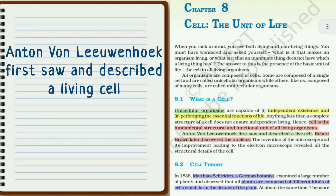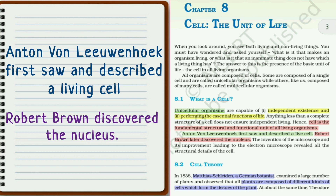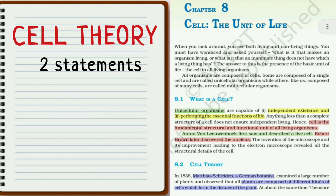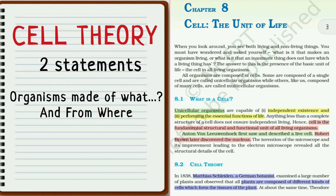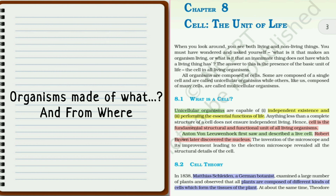Anton von Leeuwenhoek first described a living cell, and the next one is Robert Brown who discovered the nucleus of the cell. Then came the cell theory. Cell theory consists of two statements — scientists all over the world tried to understand what each and every organism was made up of and from where these were made, and resolving these two questions gave the final shape of the cell theory.